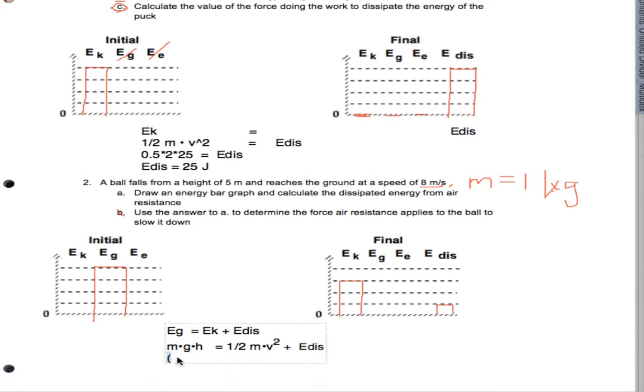So, we're going to have 1 times 10 times 5 equals 1 half times M. So, that's 0.5 times 1 times V squared, which is 8 squared, which is 64 plus E dissipated.